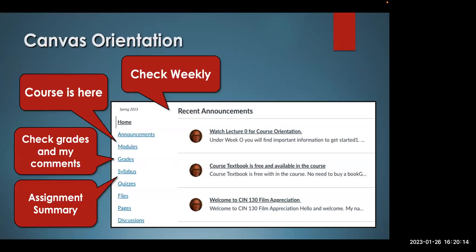Canvas orientation — a couple of things to look at when you first open up Canvas. You'll see all these links on the left. The course is in modules — you'll see modules inside of home as well. You can check your grades under grades. The syllabus in Canvas acts as an assignment summary with all assignments listed in order. Here we have weekly announcements, and you want to check those weekly — this is where I'll teach and make suggestions.